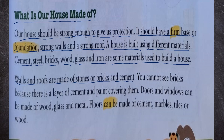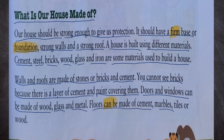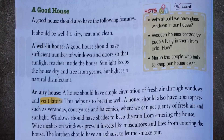You cannot see bricks because there is a layer of cement and paint covering them. Doors and windows can be made of wood, glass, and metal. Floors can be made of cement, marble, tiles, or wood.